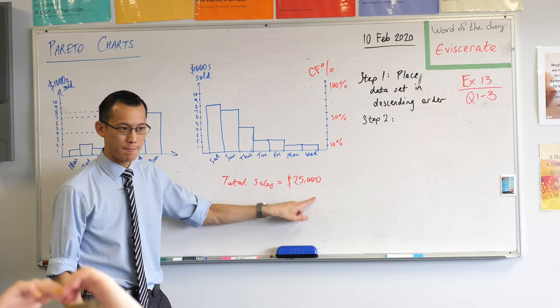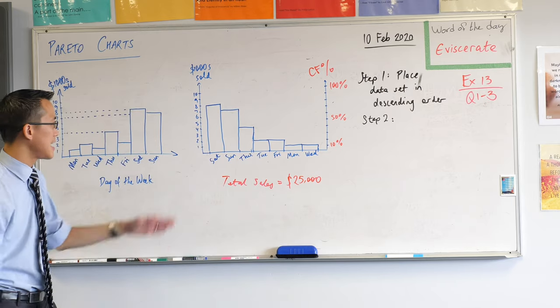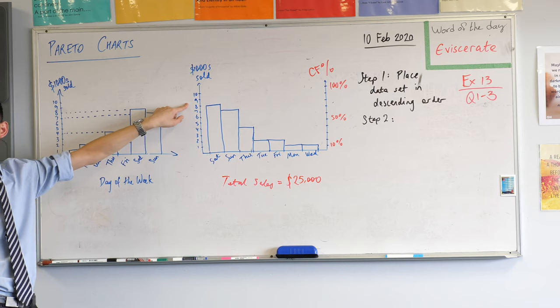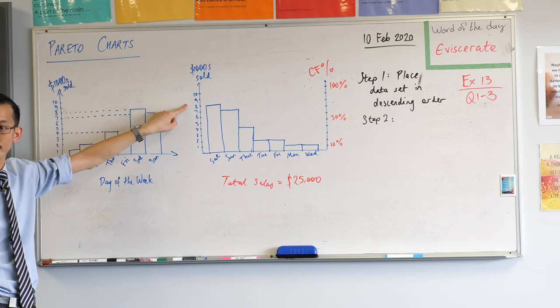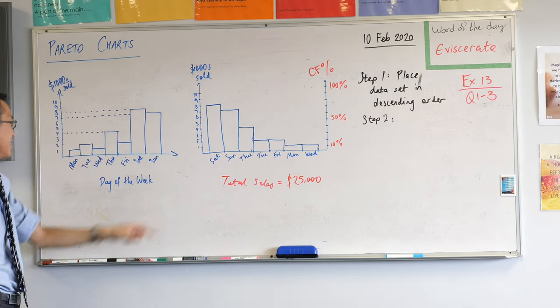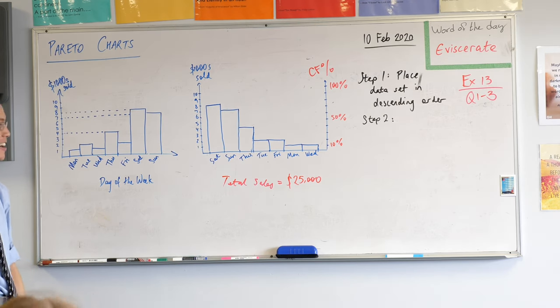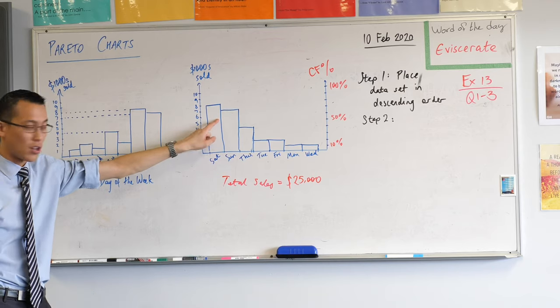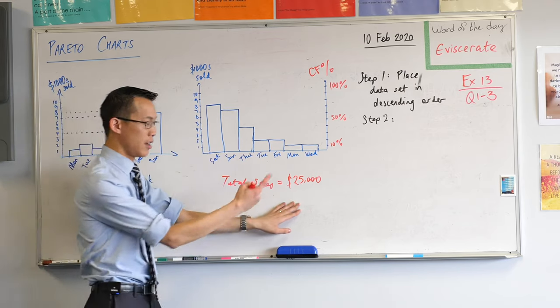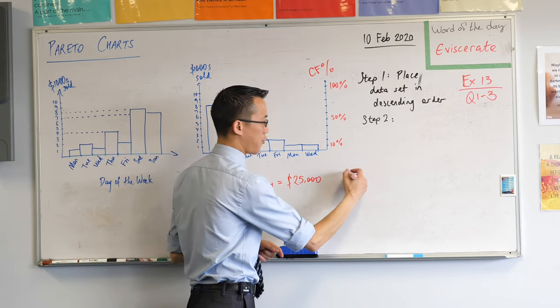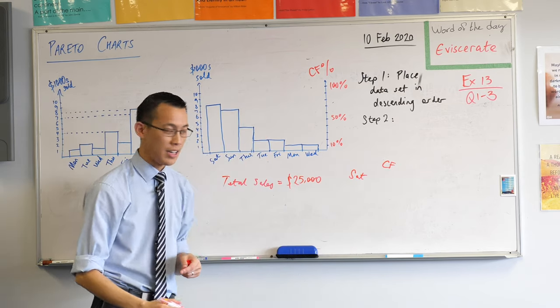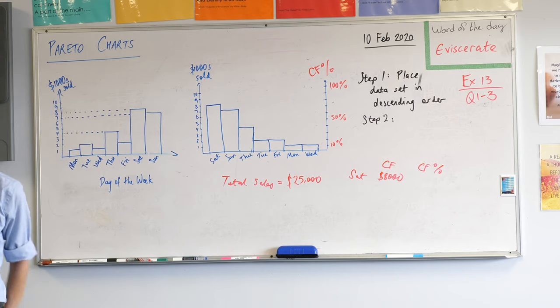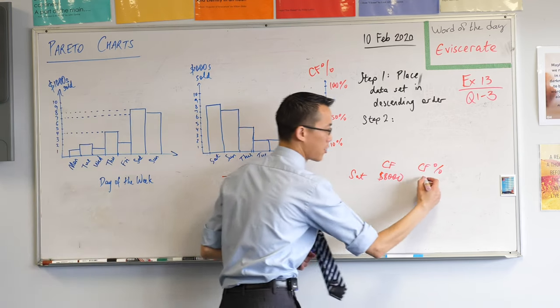Now we're going to take this figure, 25,000, and we're going to use it as our denominator each time we work out the percentage, or I should say the cumulative frequency of each of these. Let's work out our cumulative frequency percentage. Keep in mind we've reordered this. The first one's the easiest: 8,000 dollars sold on a Saturday and I would compare that to the total sales, so that's 25,000. For Saturday, the cumulative frequency just the first one is 8,000, so the cumulative frequency percentage will be 8,000 divided by the total sales over the whole week. What percentage is that? 32 percent.